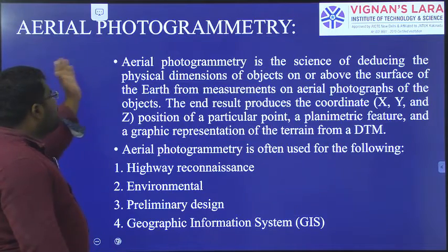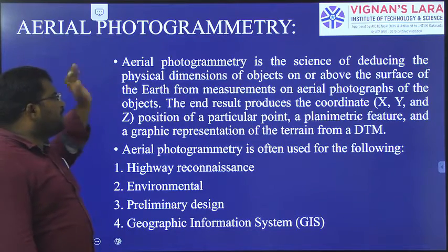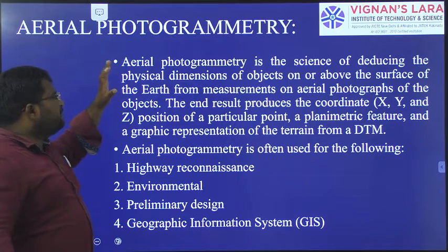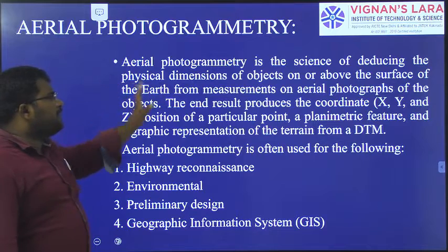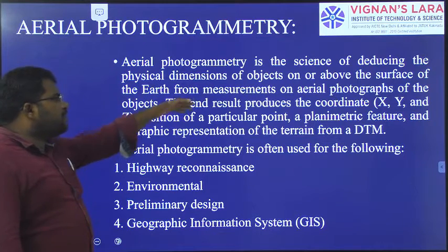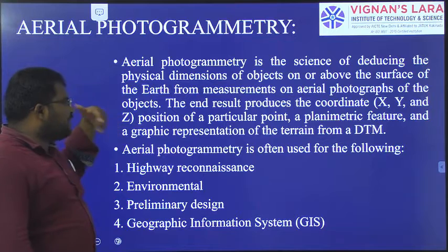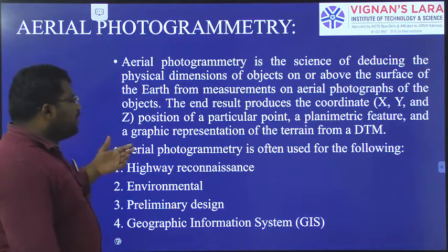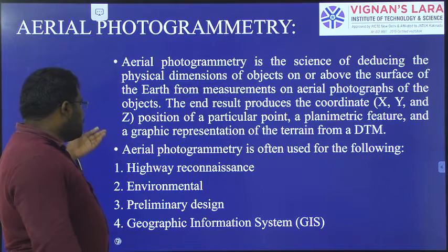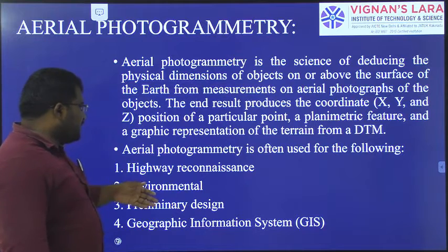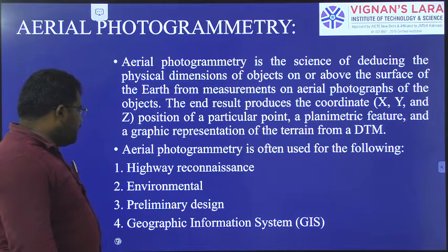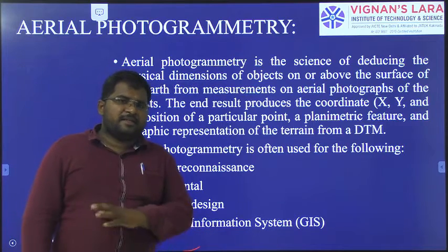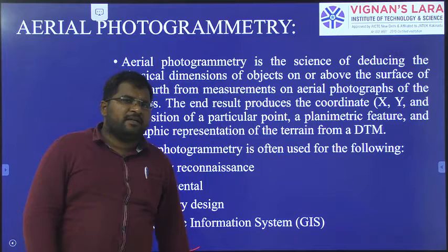The second major method is aerial photogrammetry. It is the science of deducing the physical dimensions of objects above the surface of the earth from measurements of aerial photographs of those objects. These photographs are taken by aeroplanes or helicopters. Aerial photogrammetry is used for highway design, environmental linear design, and Geographic Information Systems (GIS).